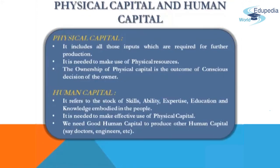Physical capital and human capital. The economic development of a country is possible only when there is optimum utilization of physical and human resources. Physical capital includes all those inputs which are required for further production, like plant and machinery, factory, buildings, raw material, etc. The physical capital is needed to make use of physical resources, and its accumulation is quite important for economic growth of a country. The ownership of physical capital is the outcome of the conscious decision of the owner. The entrepreneur possesses knowledge to calculate the expected rates of return to a range of investments and then rationally decide which one of the investments should be made. The physical capital formation is mainly an economic and technical process.